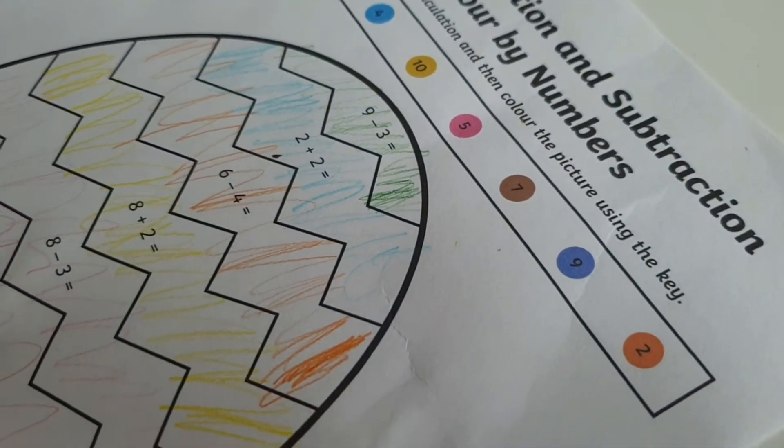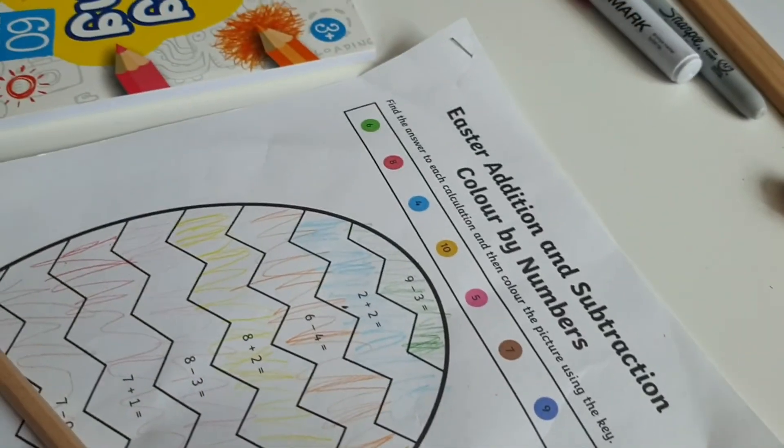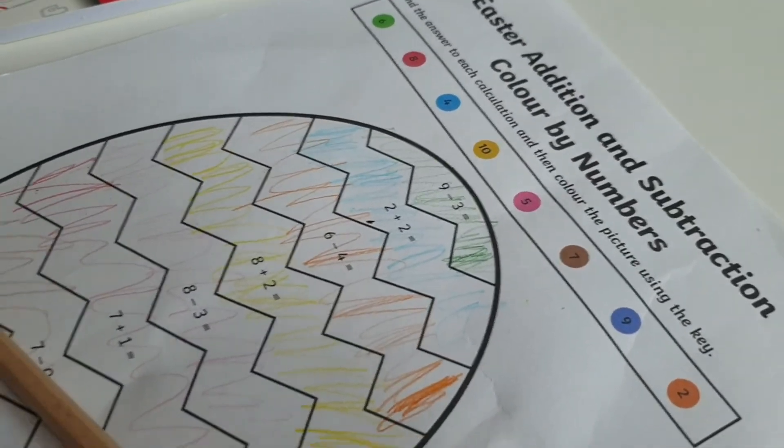So what colour is nine? Nine is purple. Purple.